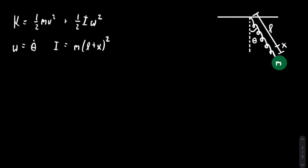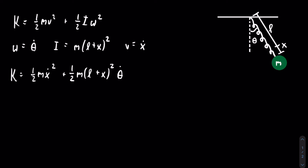The v in the kinetic energy equation will have to be changed, being equal to x dot, meaning it is the velocity in the direction parallel to the spring. Making these substitutions, we get that K is equal to one half m x dot squared plus one half m times the quantity l plus x, squared, times theta dot squared.